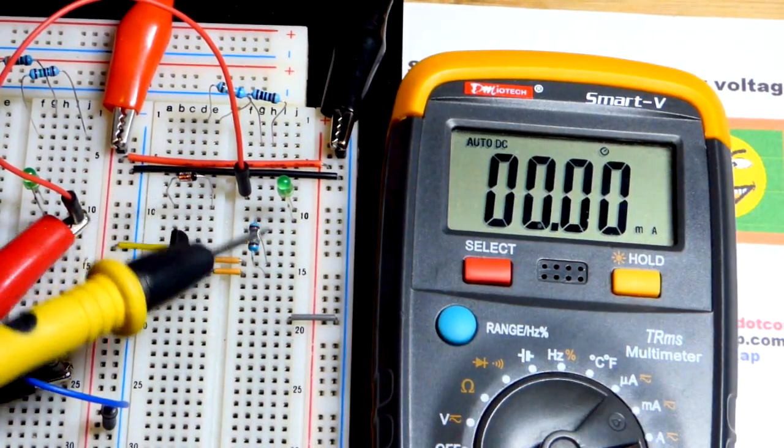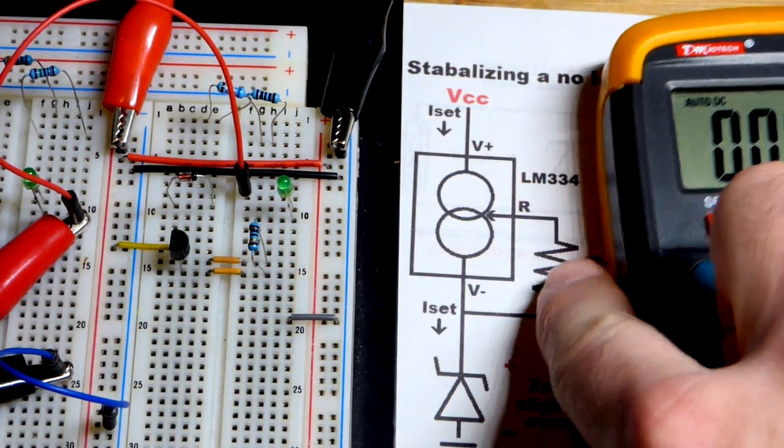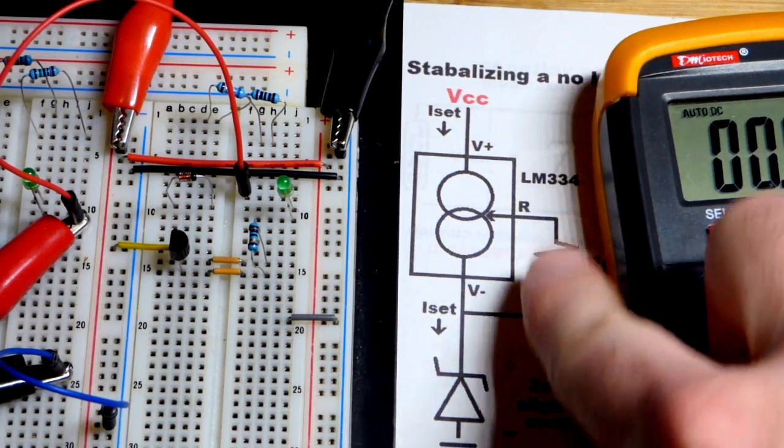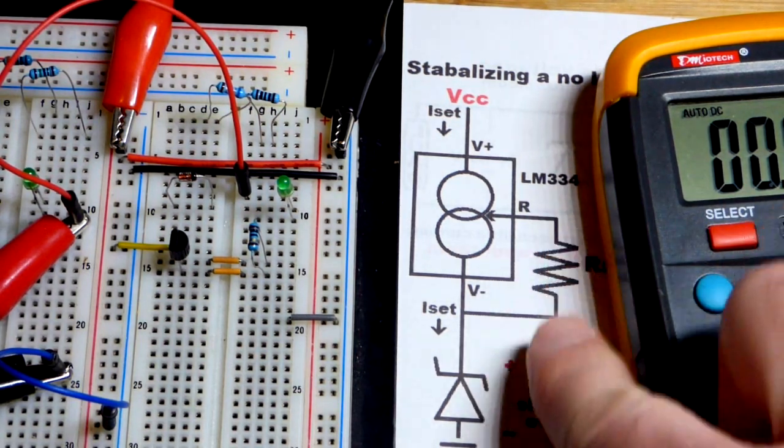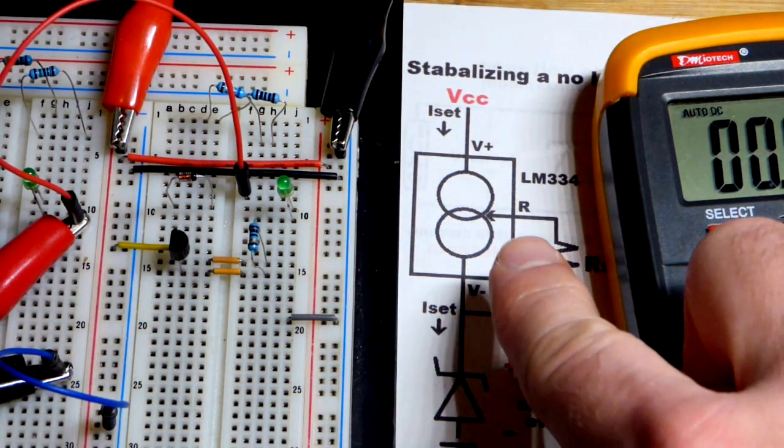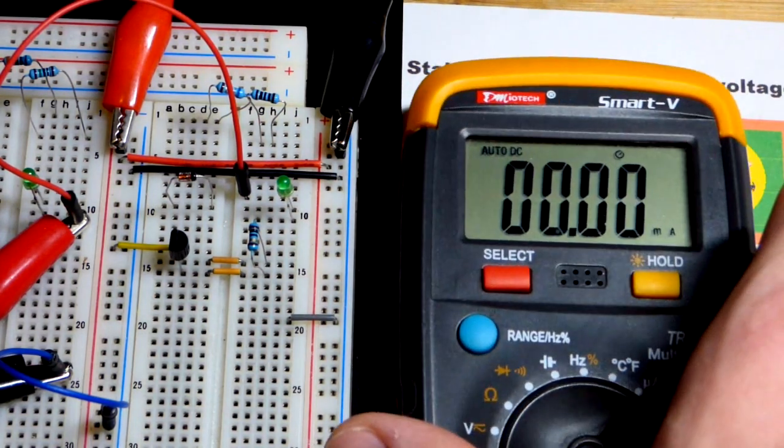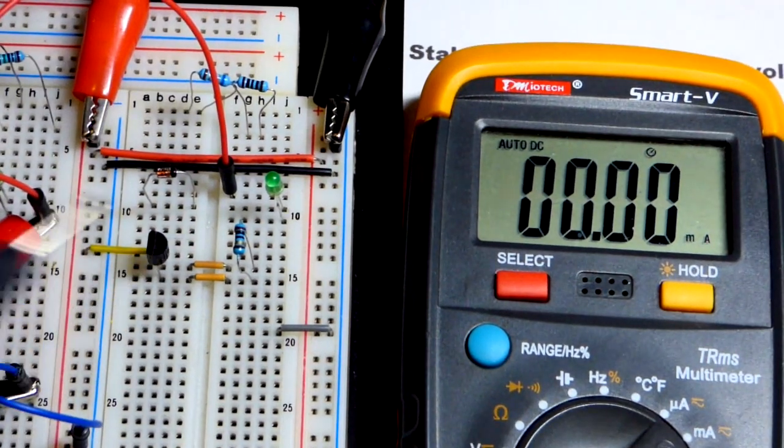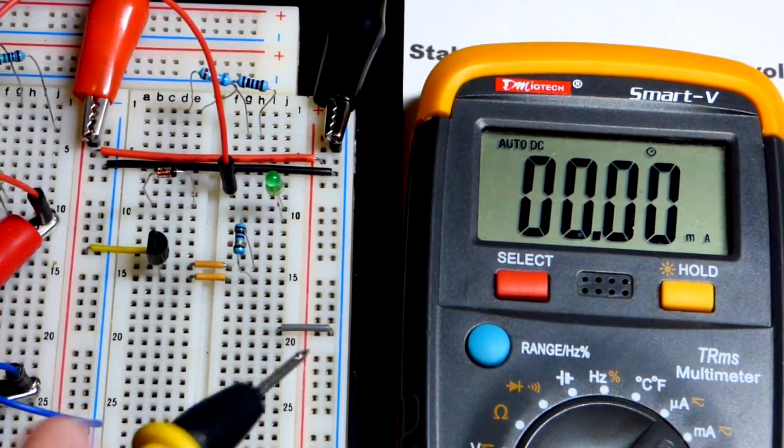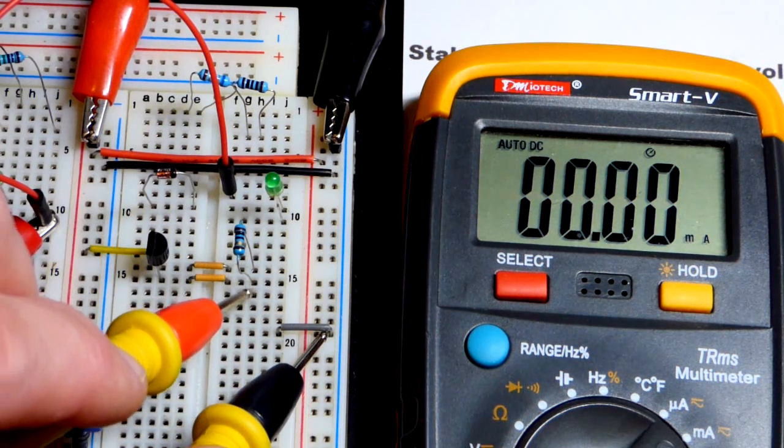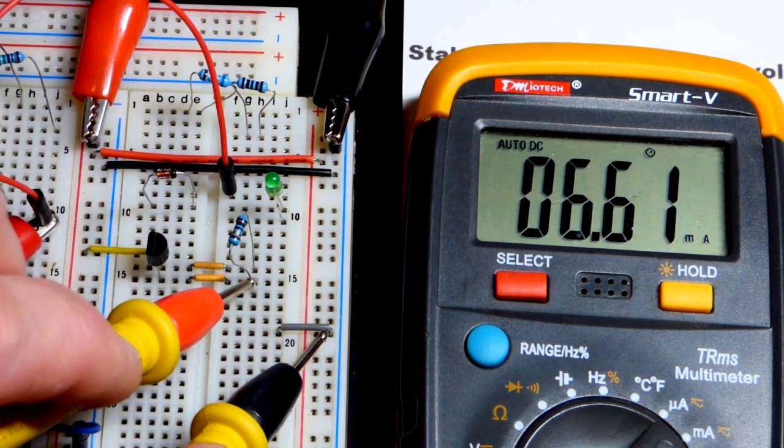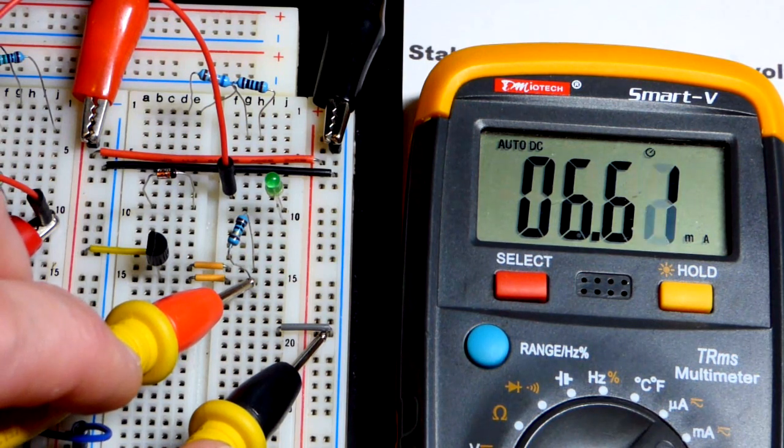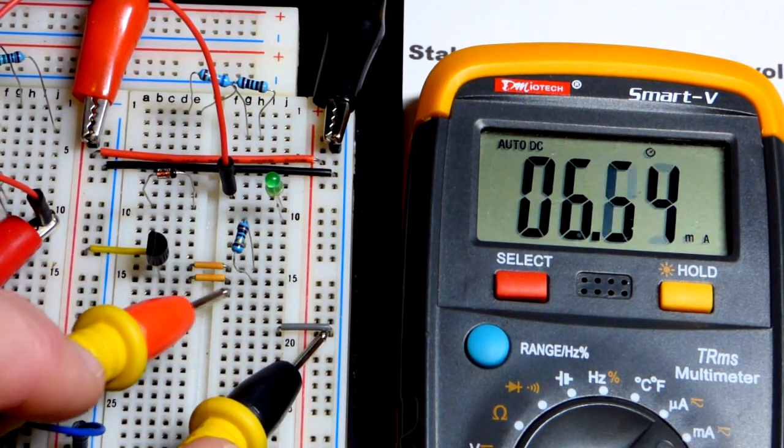So now, the setup that we have here, the set resistor, which determines how much current actually flows, it puts a voltage across there of 64 millivolts, or 0.064 volts. And so this is a 10 ohm resistor, and so we'll look at how much current is flowing through. There should be about 6.4 milliamps of current. So there you can see 6.6 milliamps of current right there.